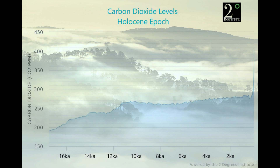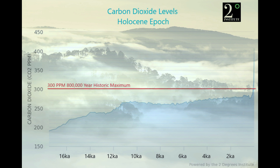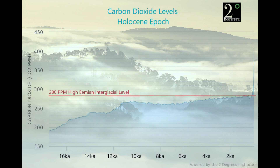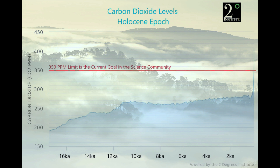Carbon dioxide levels in the Holocene epoch: we're recovering from relatively low levels of CO2 from the last glacial period. Recall 300 parts per million was our historic maximum over the last 800,000 years. 280 parts per million was the high during the extremely warm Eemian interglacial. A 350 parts per million limit is the current goal in the science community. Current levels are well over 400 parts per million.